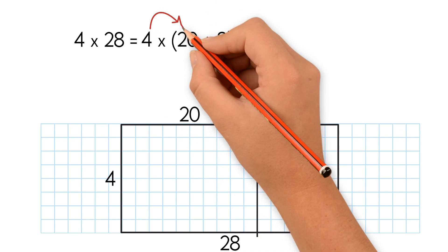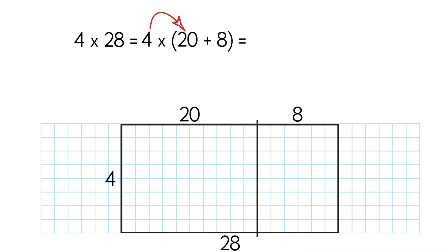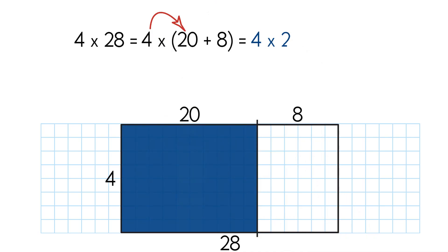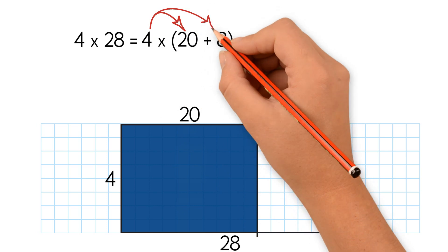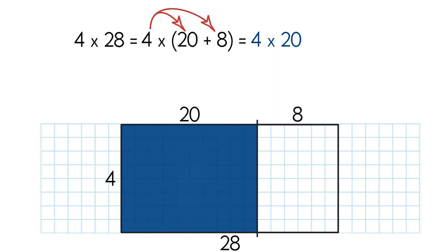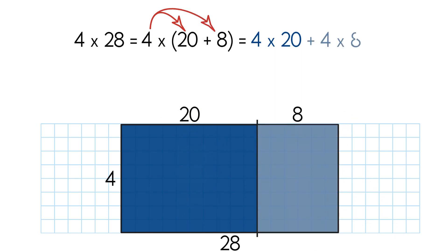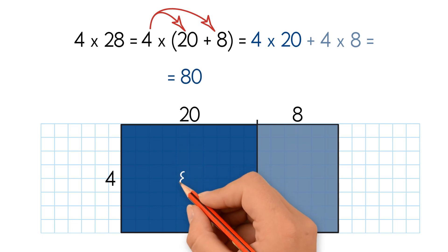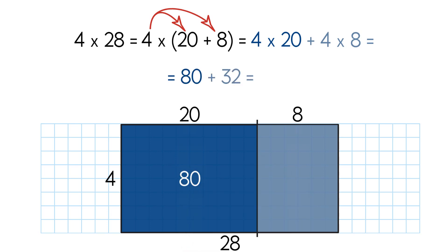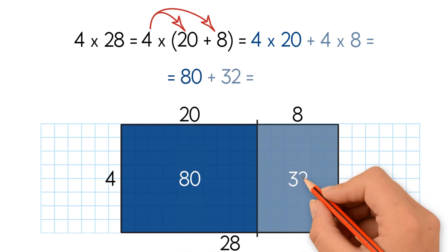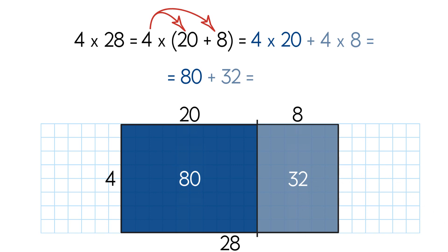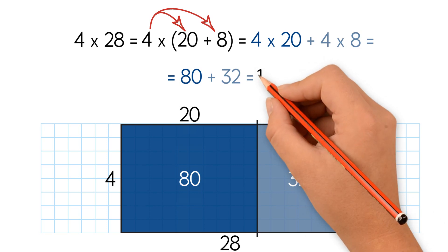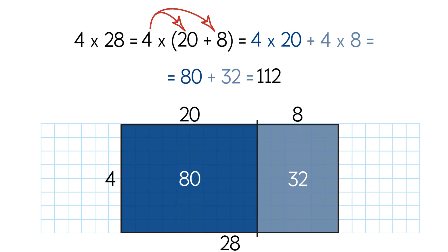We multiply 4 times 20, which is the area of the first smaller rectangle. Then we multiply 4 times 8, which is the area of the second smaller rectangle. We get 80 and 32 as the partial products. We add them up to find the total area or the product of 4 and 28. So 4 times 28 equals 112.